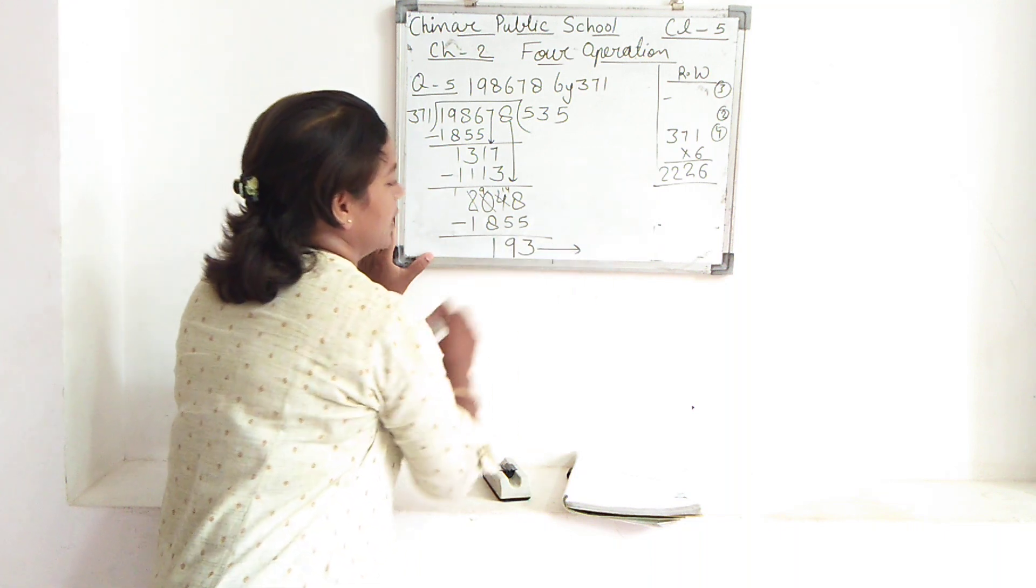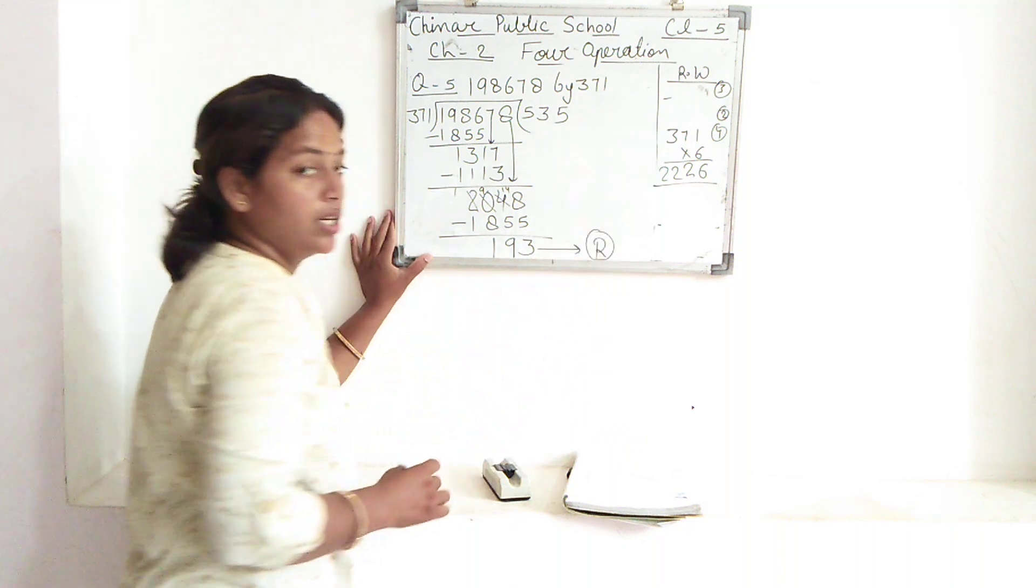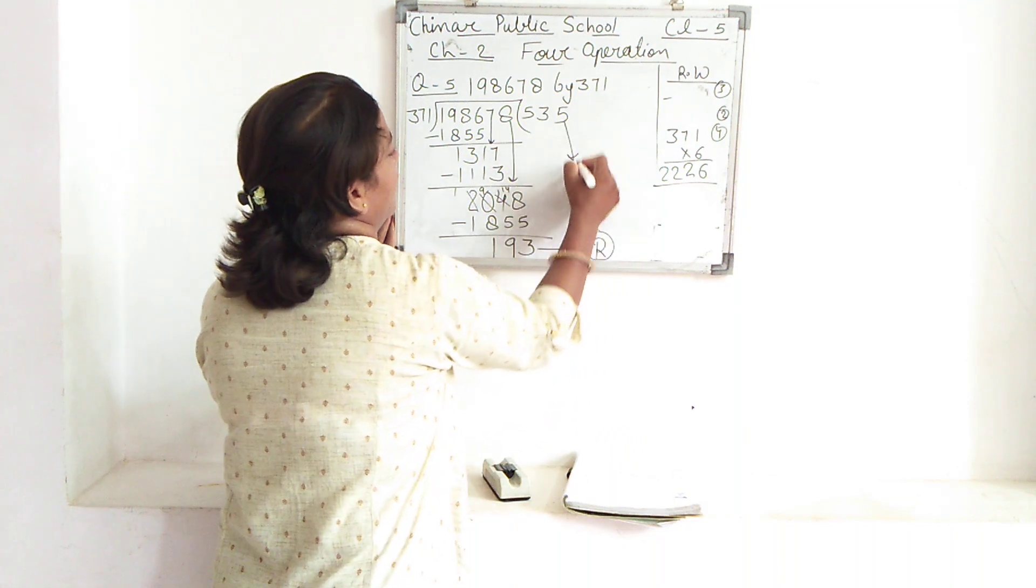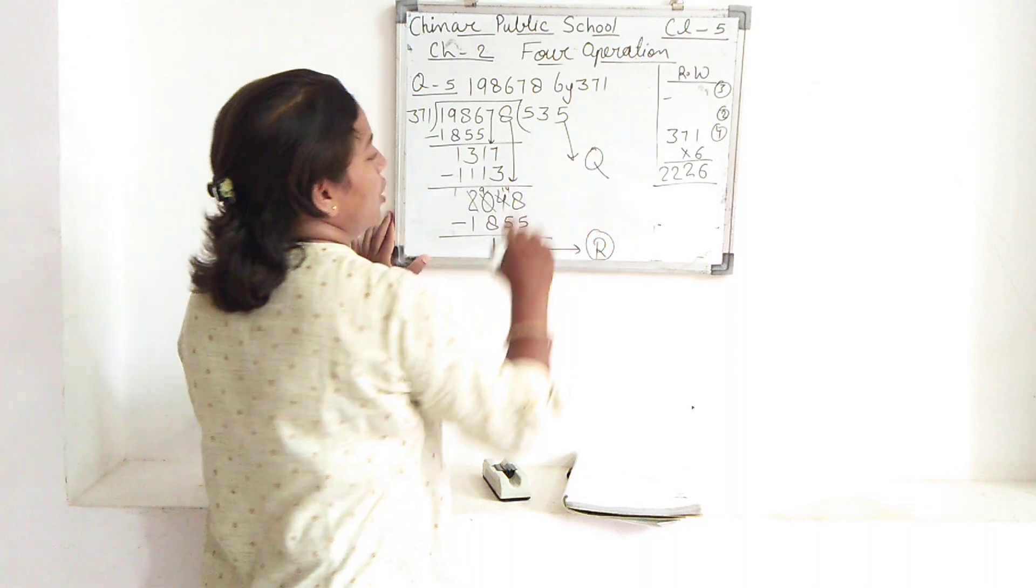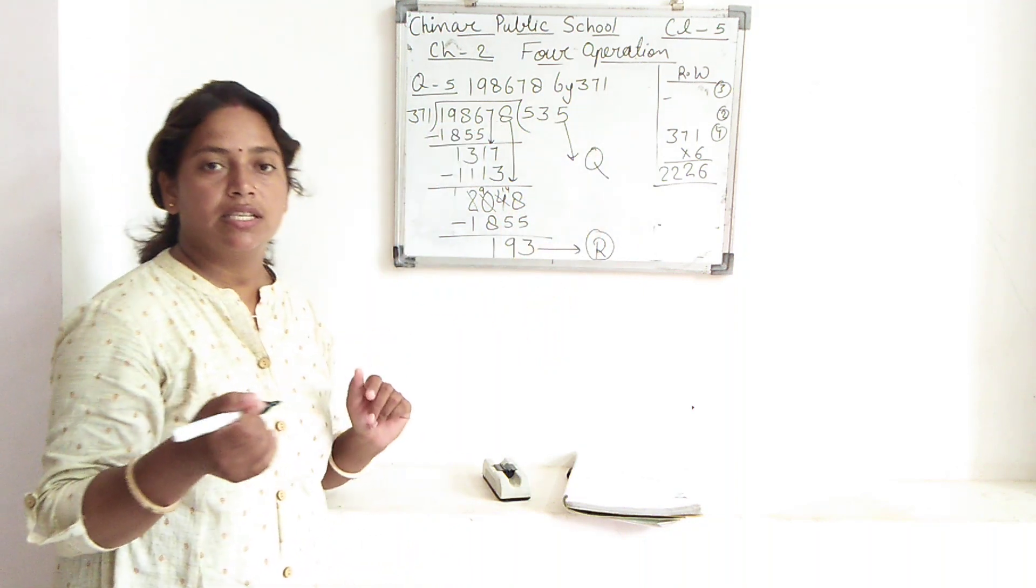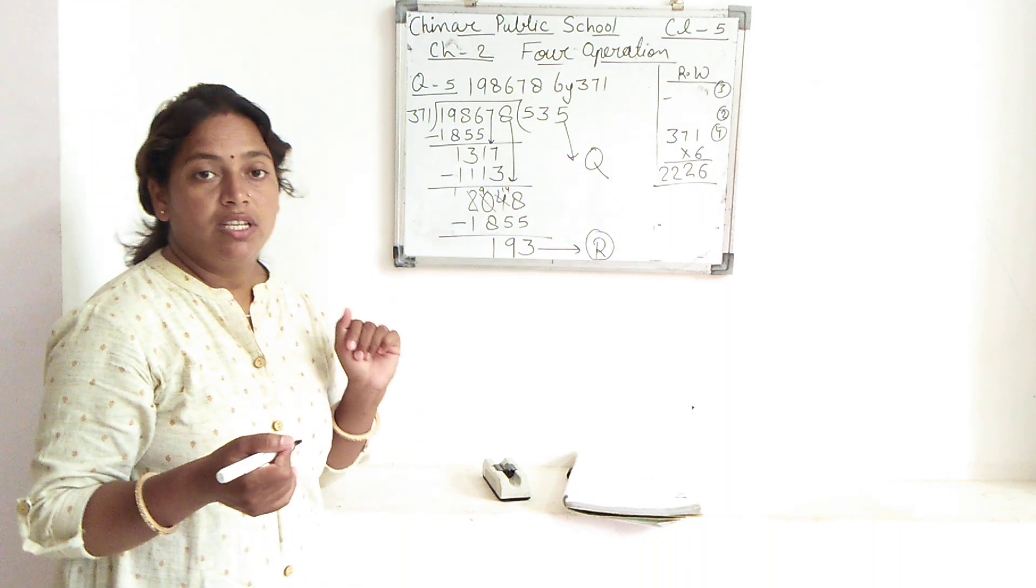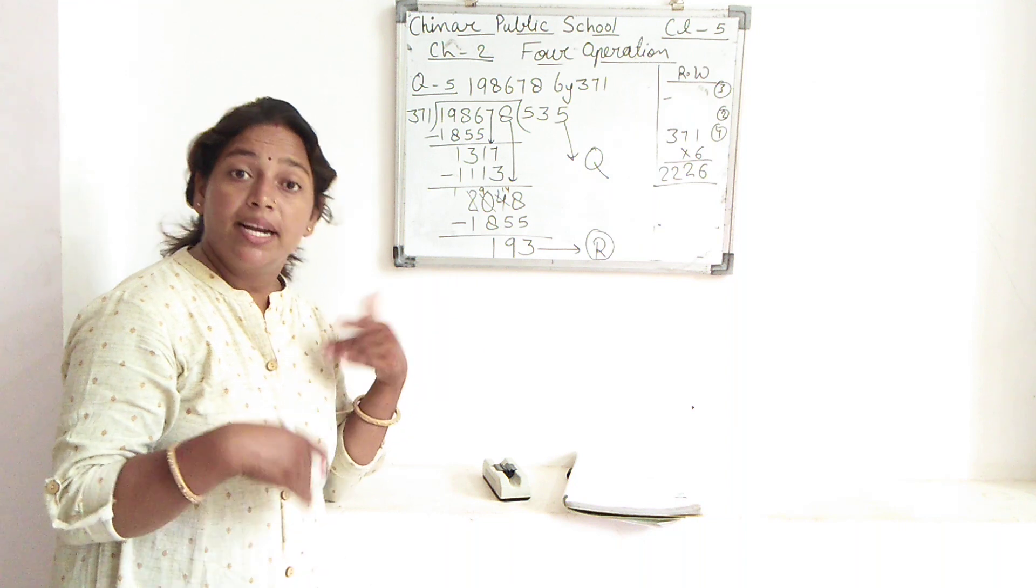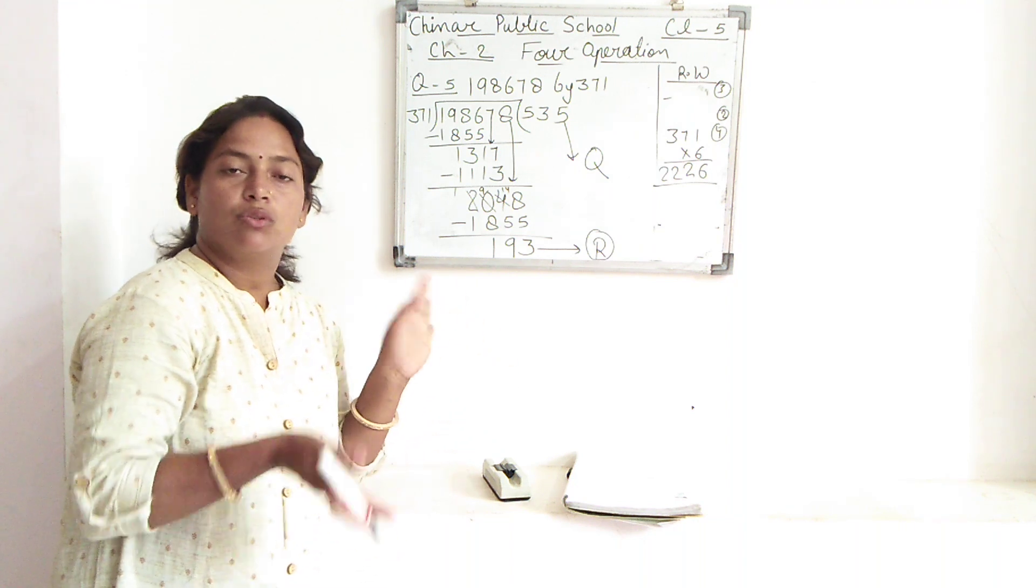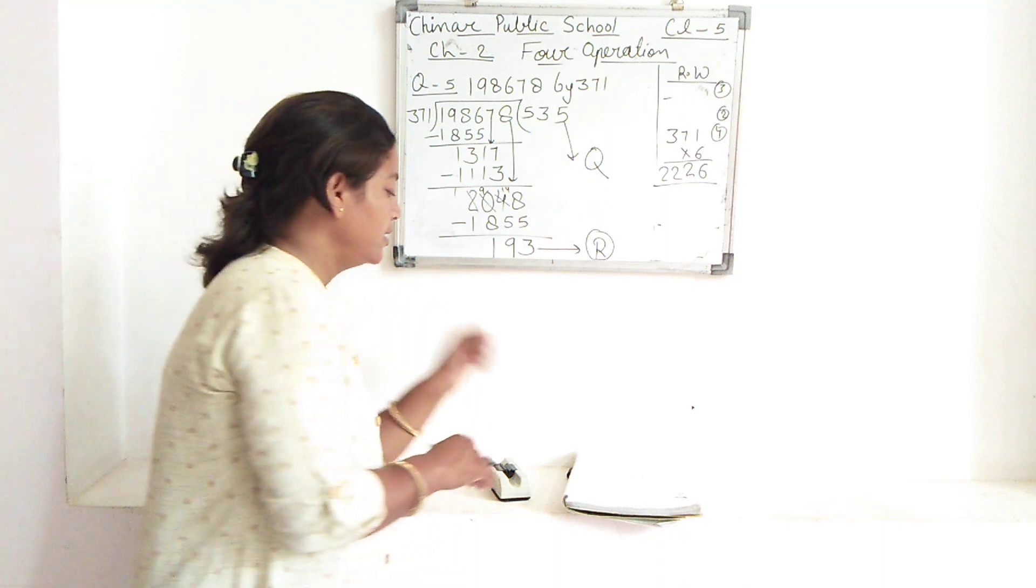So what is the name of this 193? This is remainder. And this 535 is called quotient. And I have told you the name of 198,678 is the dividend, and the name of 371 divides the number, that is called divisor. Is it clear? So now it is time for checking.